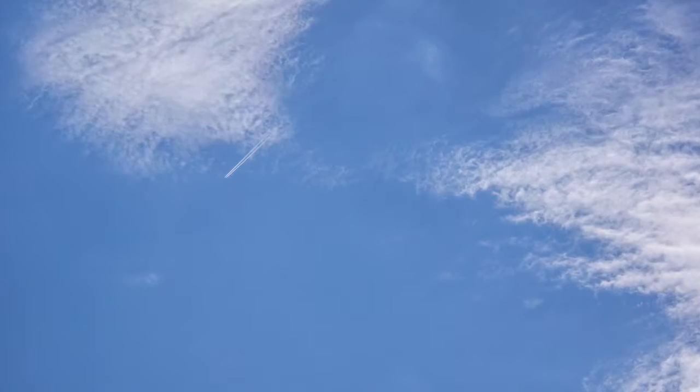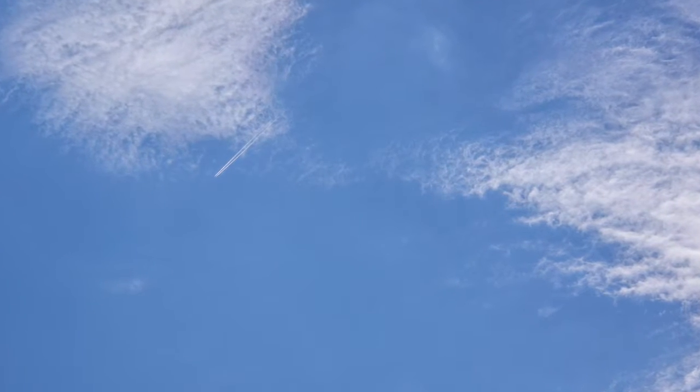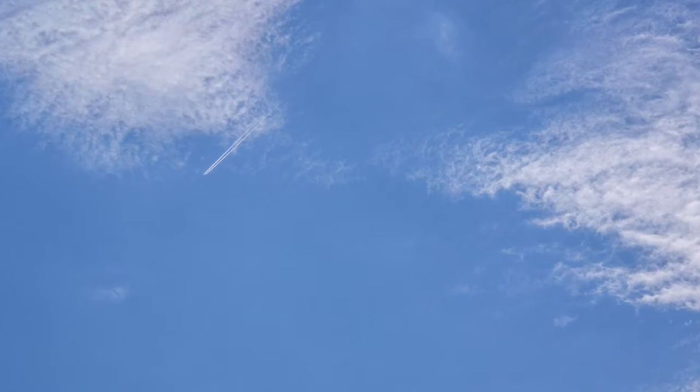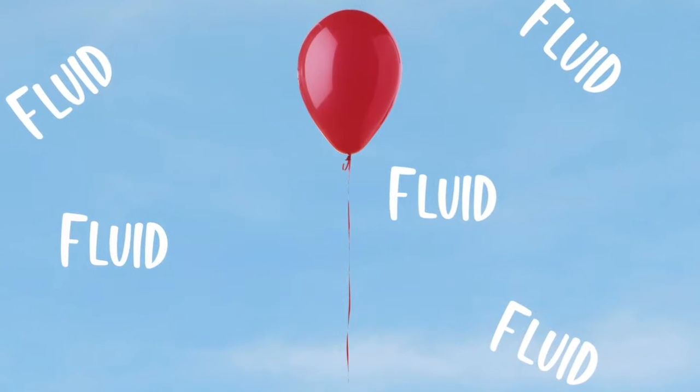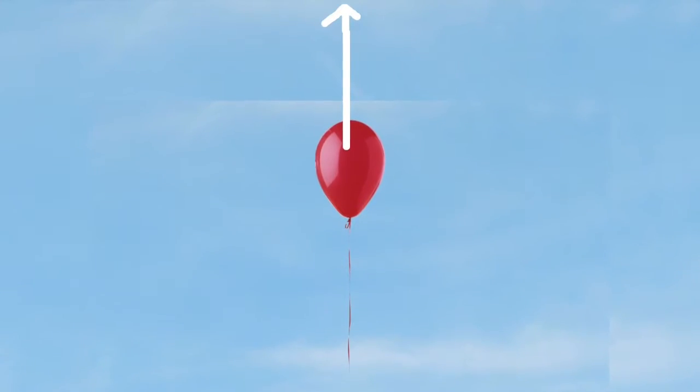It may not seem like it, but the air is a fluid like water, and fluid is any substance that can flow and alter its shape. So when a balloon is in the air, it is submerged in fluid. It floats because the force from the fluid pushing up is greater than the force pulling it down, which we commonly know as gravity.